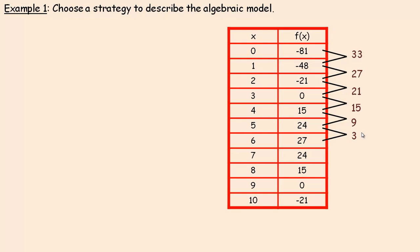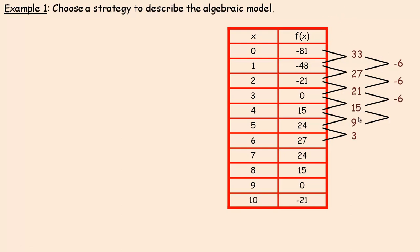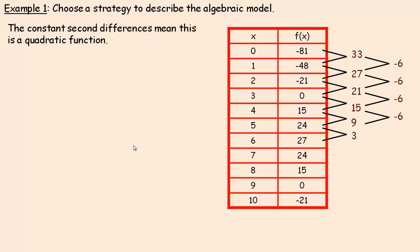Since the first differences are not constant, we go to the second differences to see if it's quadratic. From 33 to 27 it's going down 6. Then 27 to 21 is down 6 again, 21 to 15 is down 6, and 15 to 9 is down 6. They are all the same — constant second differences means it's a quadratic function.